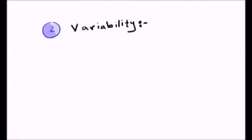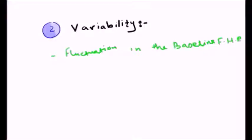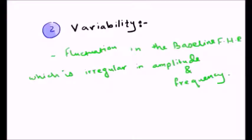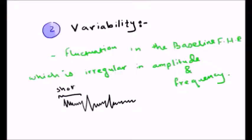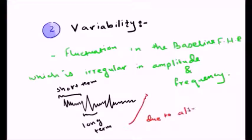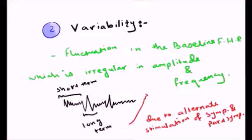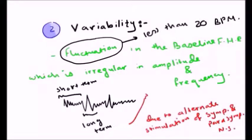Now let's talk about variability. The definition of variability is the fluctuations in the baseline fetal heart rate which are irregular in amplitude and frequency. Variability is caused by the alternate stimulation of the sympathetic and parasympathetic nervous system, because the fetus is premature and the central nervous system is not fully developed like in adults.